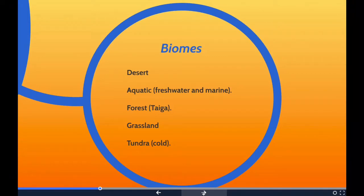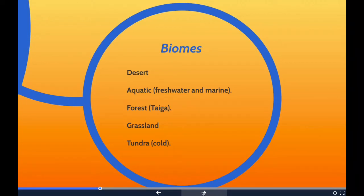A question you might see could ask — for example, are oceans located within the freshwater biome or the marine biome? Oceans are part of marine biomes. For the forest biomes, there are three main types: tropical rainforest, temperate, and boreal forests. Boreal forests are also referred to as taiga — T-A-I-G-A — and that's one you should be familiar with. Taiga means forest biome; that's what you need to know.